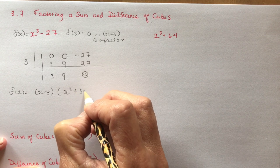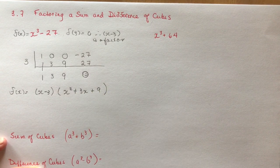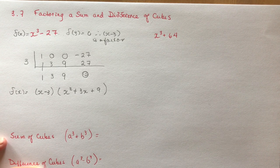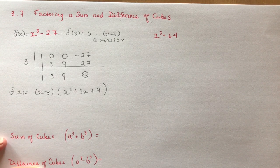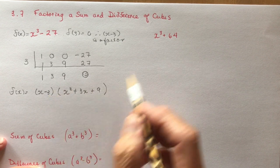So that means that f at x is equal to x minus 3 times x squared plus 3x plus 9. Okay, so that's kind of the first thing that you should do.